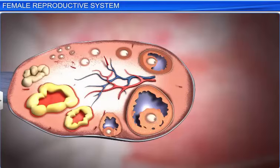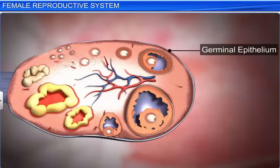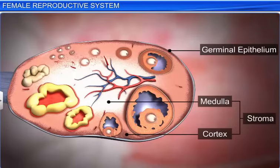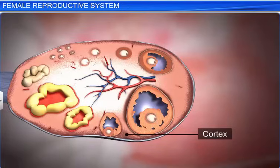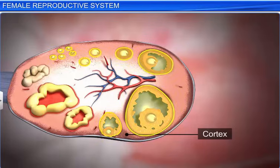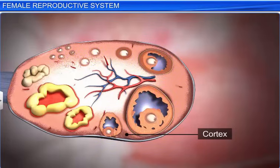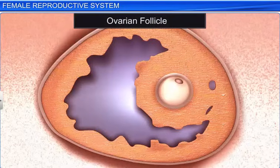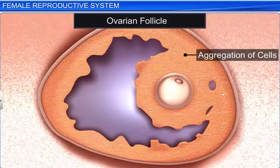Each ovary is covered by an outer thin layer called the germinal epithelium. The germinal epithelium encloses the ovarian stroma, which is further divided into the outer cortex and the inner medulla. The cortex consists of many ovarian follicles in different stages of development. The ovarian follicle is the basic unit of the female reproductive system, and is composed of roughly spherical aggregations of cells found in the ovary.